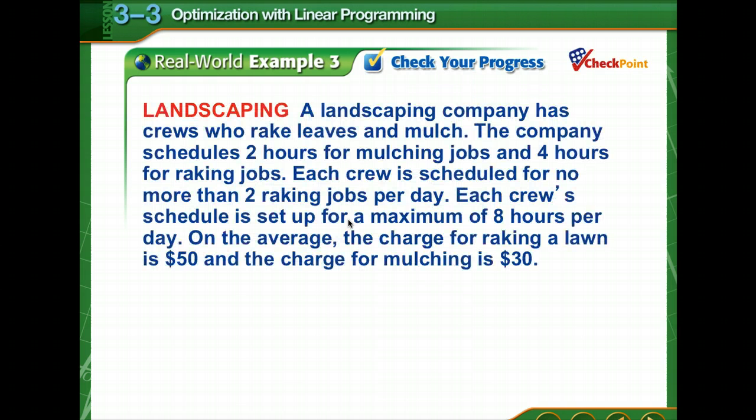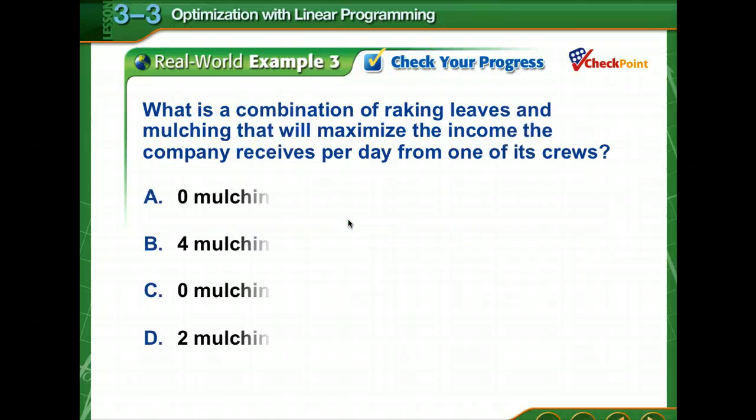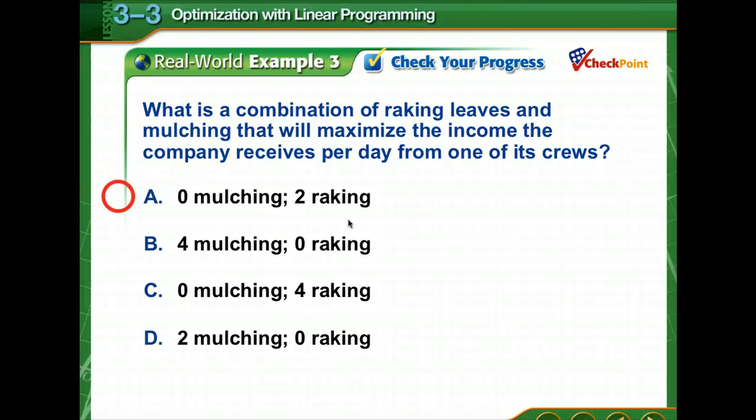Time to check your progress. And again, you'll want to take a note of the keywords that's in this problem so that you can work the problem on the next page. So pause the video for a moment to make a note of those keywords. So what combination of raking leaves and mulching will maximize the income? Why, four mulching and zero raking jobs. Very good.